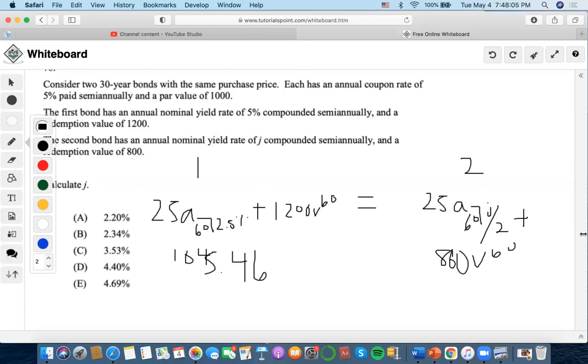And then once we find out that 2.20 is the interest rate, j equals 2.20. And then before it was compounded semi-annually, so we multiply both of these. We end up getting D.